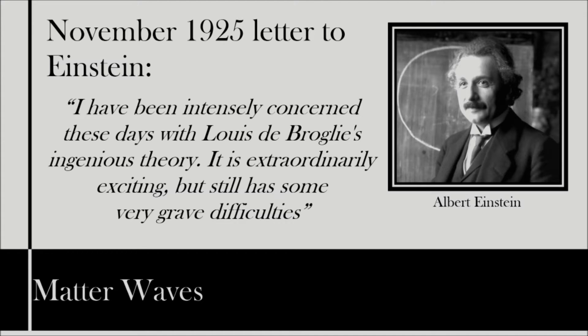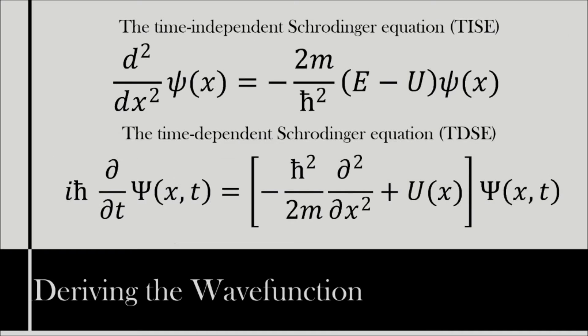A week later, at a seminar on de Broglie's thesis, an audience member suggested that there should be a wave equation, and shortly afterwards, Schrödinger had derived his wave equation, a quantum wave equation, which determines the behaviour of these matter wave functions.